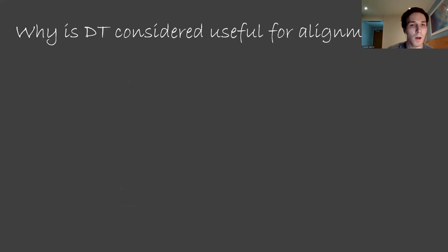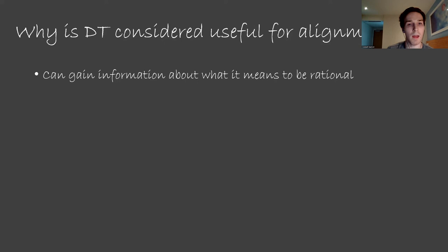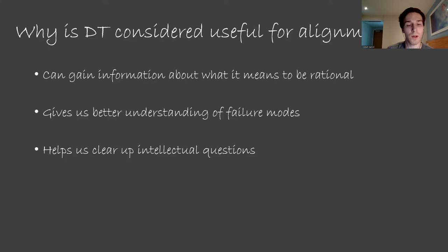So why is decision theory interesting when thinking about alignment? Here are a few reasons people are interested in decision theory, courtesy of an article written by Wei Dai on Less Wrong. Decision theory gives us information about what it means to be rational and how different agents could go about pursuing their goals. As part of this, it gives us a terminology that we can use to talk about agents and agentic behavior. Decision theory gives us a better understanding of failure modes. If there is some flaw in certain decision making procedures, then we should keep an eye out for these in our AI systems, since this may be part of the decision theory that they use.